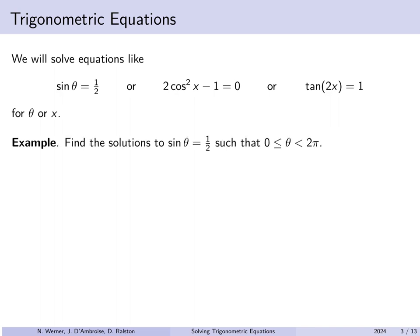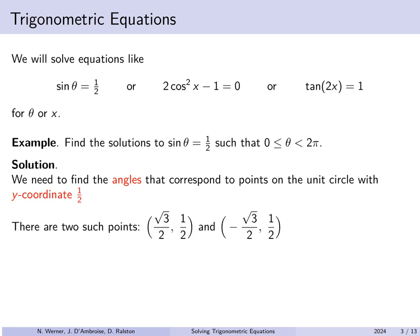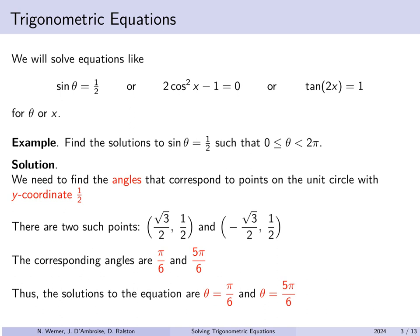Let's find all θ between 0 and 2π such that sin θ = 1/2. We're looking for angles on the unit circle with a y-coordinate of 1/2. There are two such points: with y = 1/2, the x-coordinates are ±√3/2. These correspond to the standard reference angles π/6 and 5π/6. So the only solutions between 0 and 2π for which sin θ = 1/2 are π/6 and 5π/6.